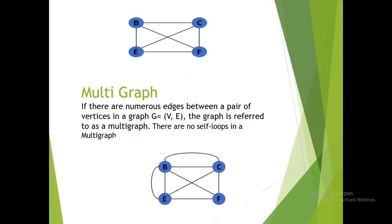Multigraph: if there are numerous edges between a pair of vertices in a graph G = (V, E), the graph is referred to as a multigraph. There are no self-loops in a multigraph.